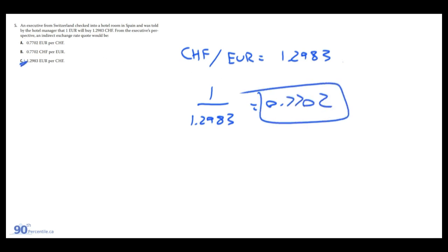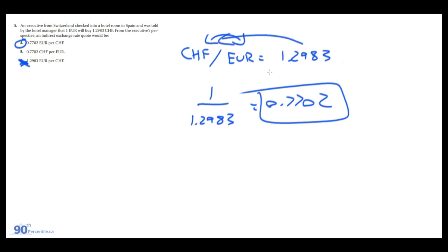Looking at the answers, the indirect quote would switch euros and Swiss francs because we're taking the reciprocal. So the direct quote of 1 euro costing 1.29 Swiss francs becomes: 0.7702 euros costs 1 Swiss franc. The answer is A.